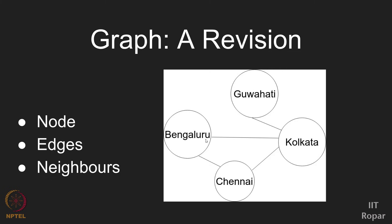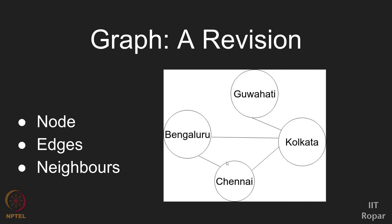There is an edge — a line between two nodes — if there is a direct train from one city to another. That is how we modelled and created the network graph. Nodes and edges are the terminologies to recall. Another thing we had seen is neighbours: neighbours are all the nodes a particular node is connected to using an edge. For example, for node Kolkata, the neighbours are Guwahati, Bengaluru, and Chennai. The node Chennai has two neighbours: Bengaluru and Kolkata.